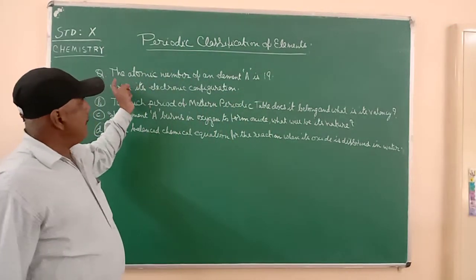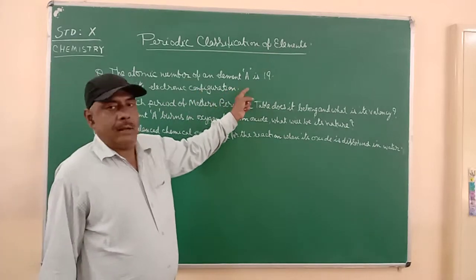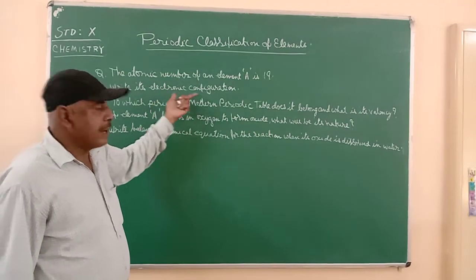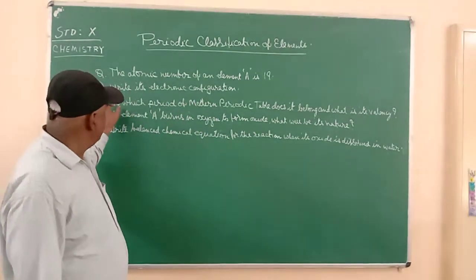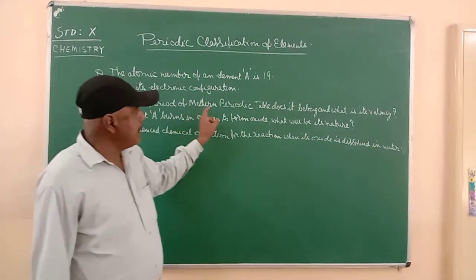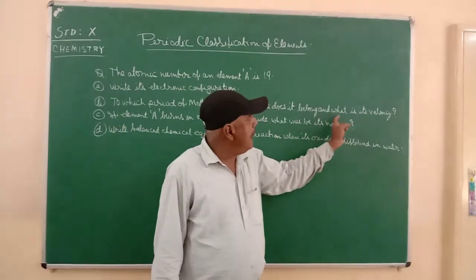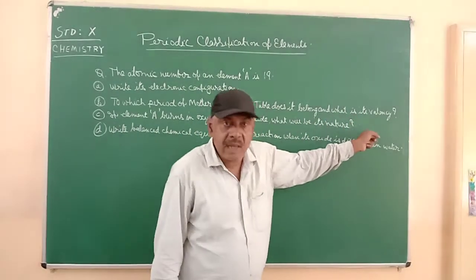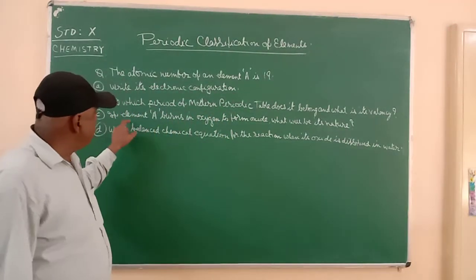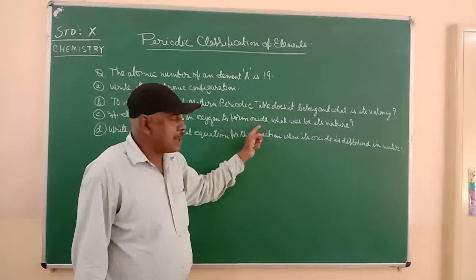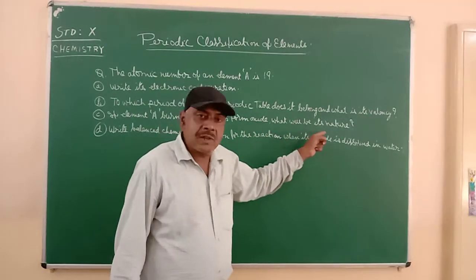The question is: the atomic number of an element A is 19. Write its electronic configuration. To which period of the modern periodic table does it belong and what is its valency?